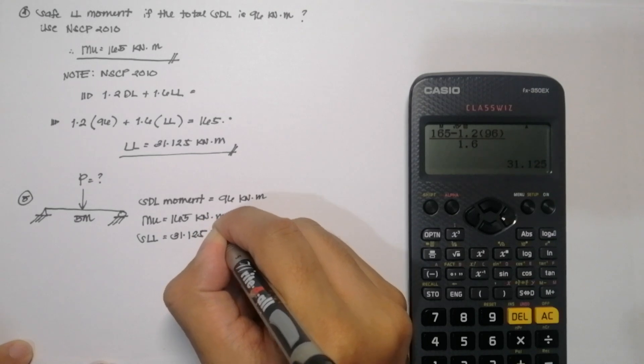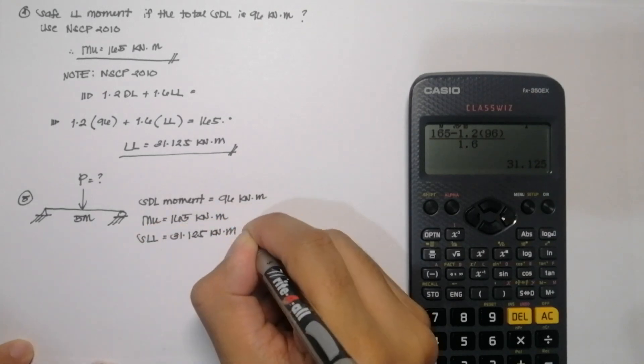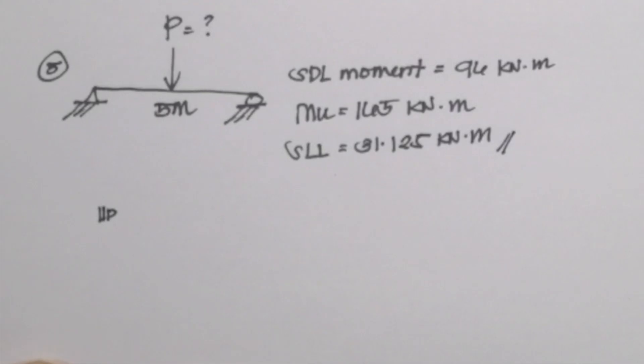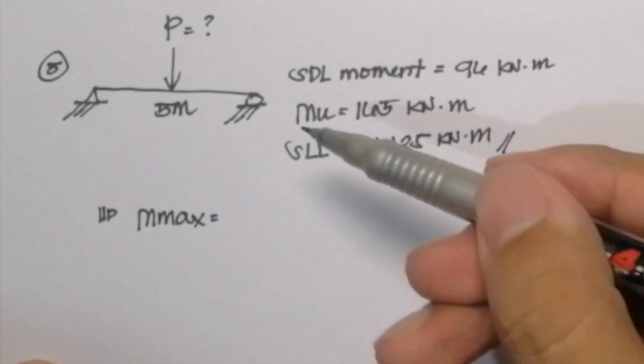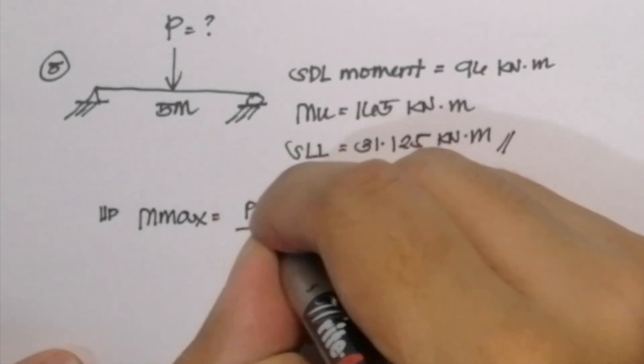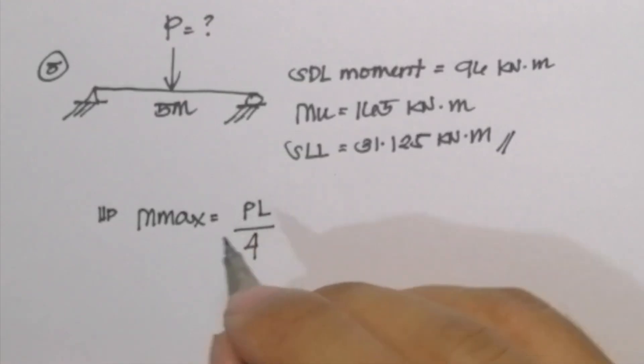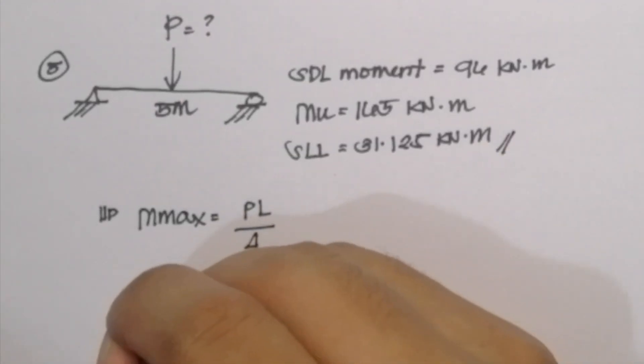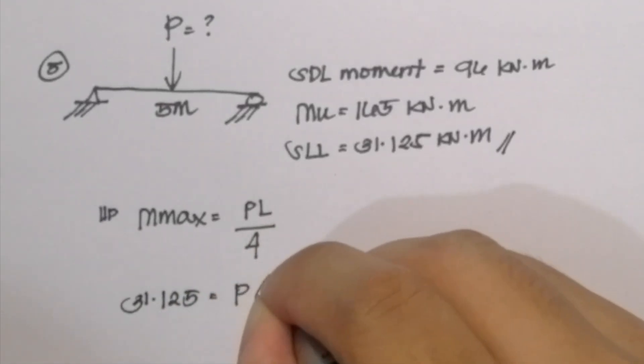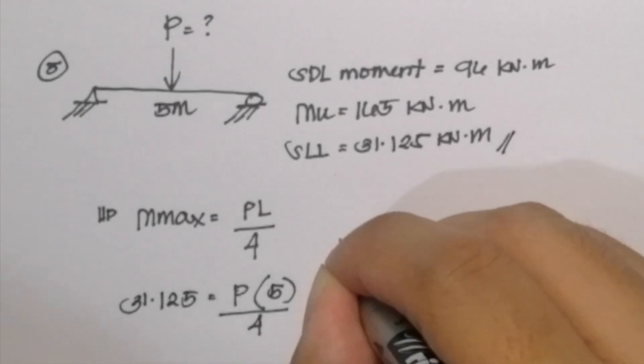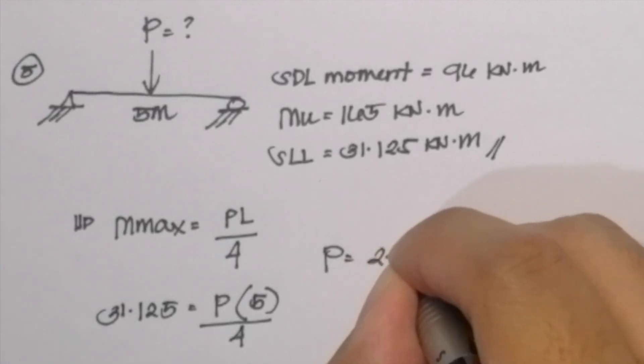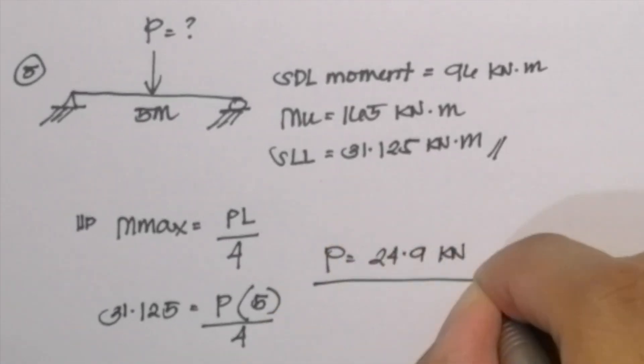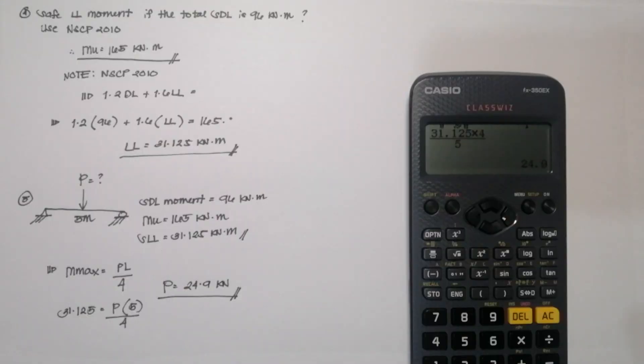So we will solve the value of P from our safe live load. So by recalling our previous lessons in our engineering subjects, the maximum moment in this type of beam is equal to PL over 4. So our maximum allowable that will be used is 31.125 and we can equate it to PL over 4. Our length is 5, so now we can solve for the value of P. P is equal to 24.9 kilonewton. And that is the answer for the final question.